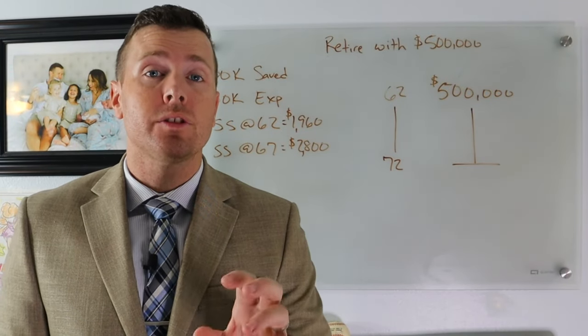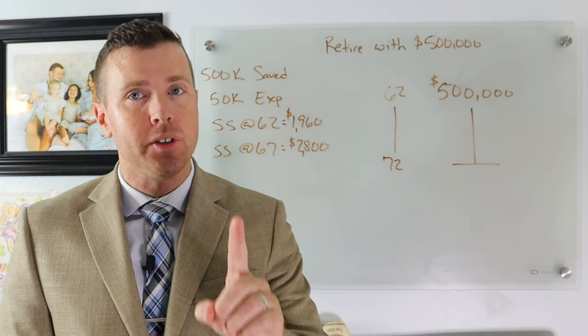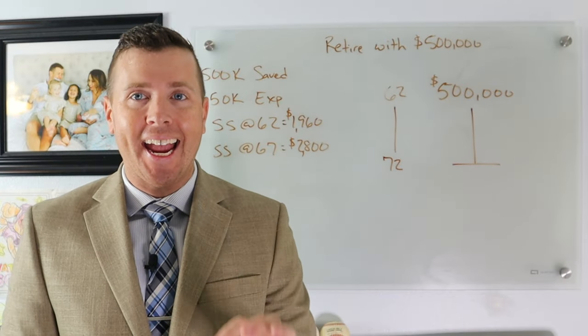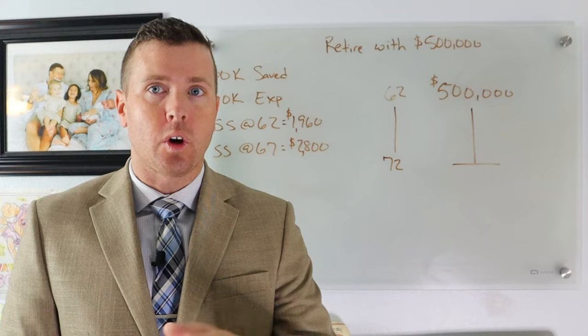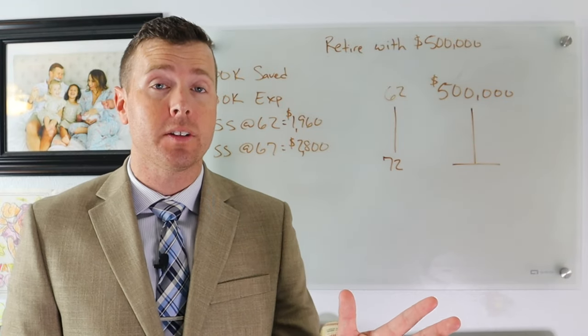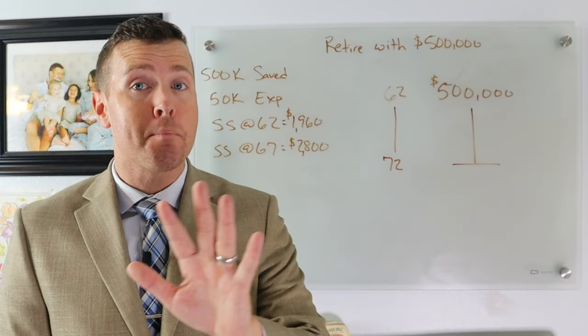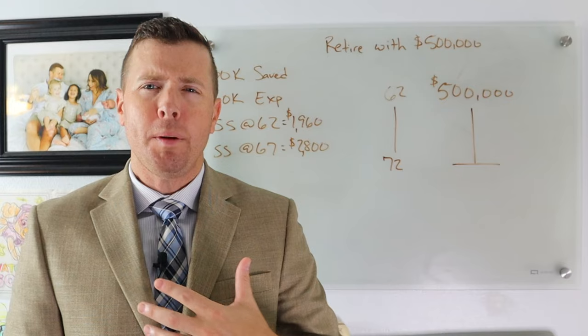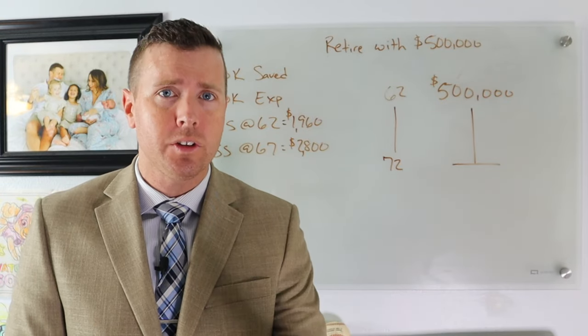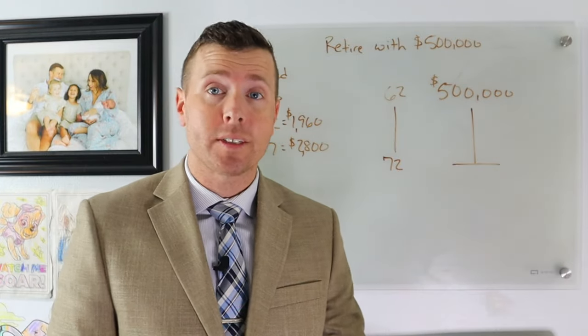I got $500,000 saved for retirement and I want to retire at 62 years old. Can I do it? If you remember the last session, we retired at 66 with $500,000 and that got us to age 94. Now we're going to back up and say, what about retiring at 62? When I'm first eligible for Social Security, can I retire?